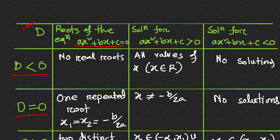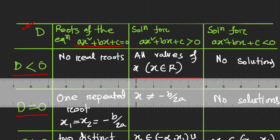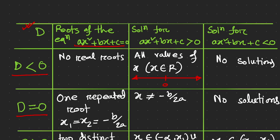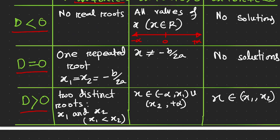So whenever we see an inequality like this, we can say all values of x from negative infinity to positive infinity are the solution. If I draw a one-dimensional number line, from negative infinity to positive infinity, all numbers are the solution for this inequality when D < 0. However, if the inequality is ax² + bx + c < 0, there is no solution.